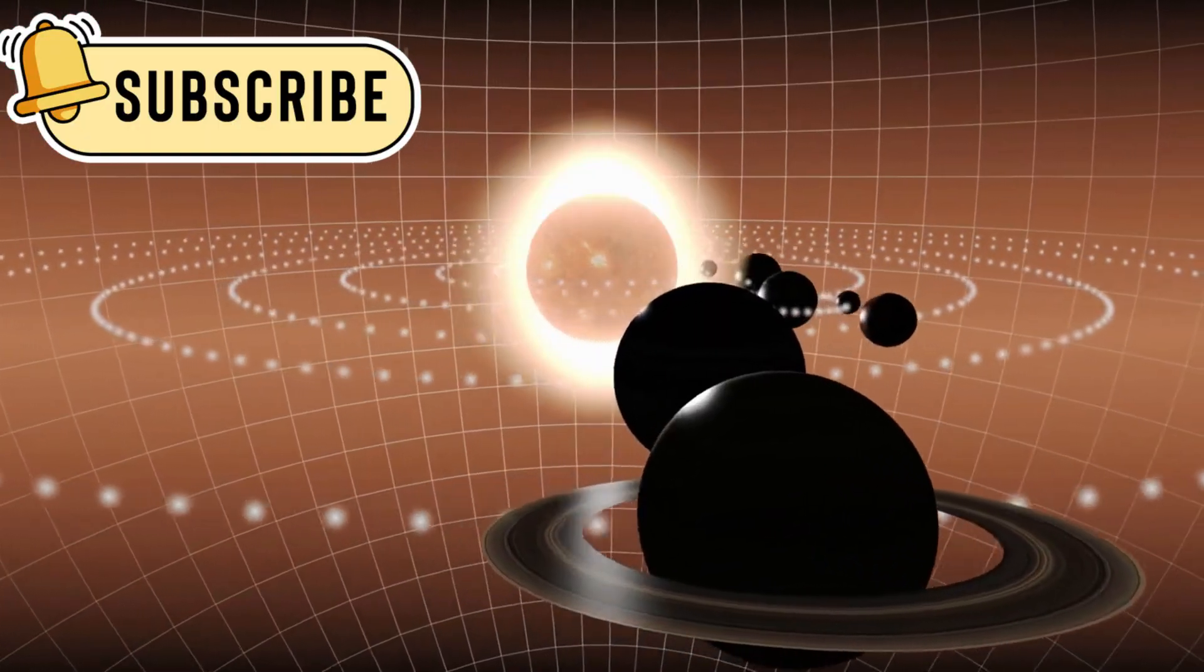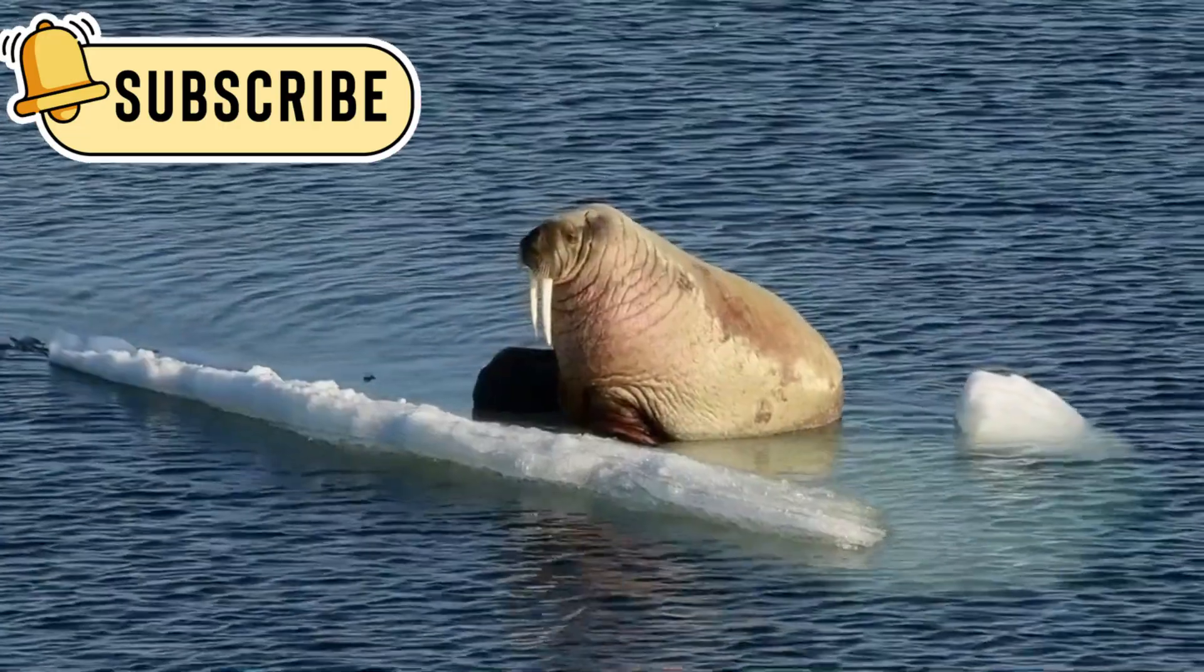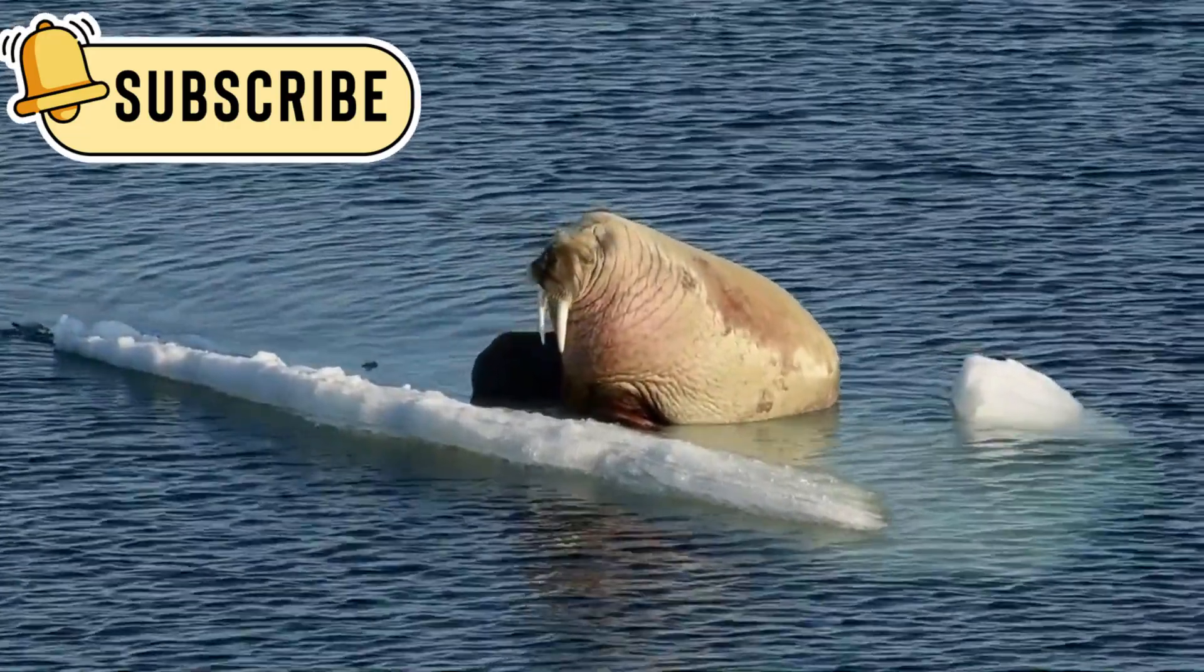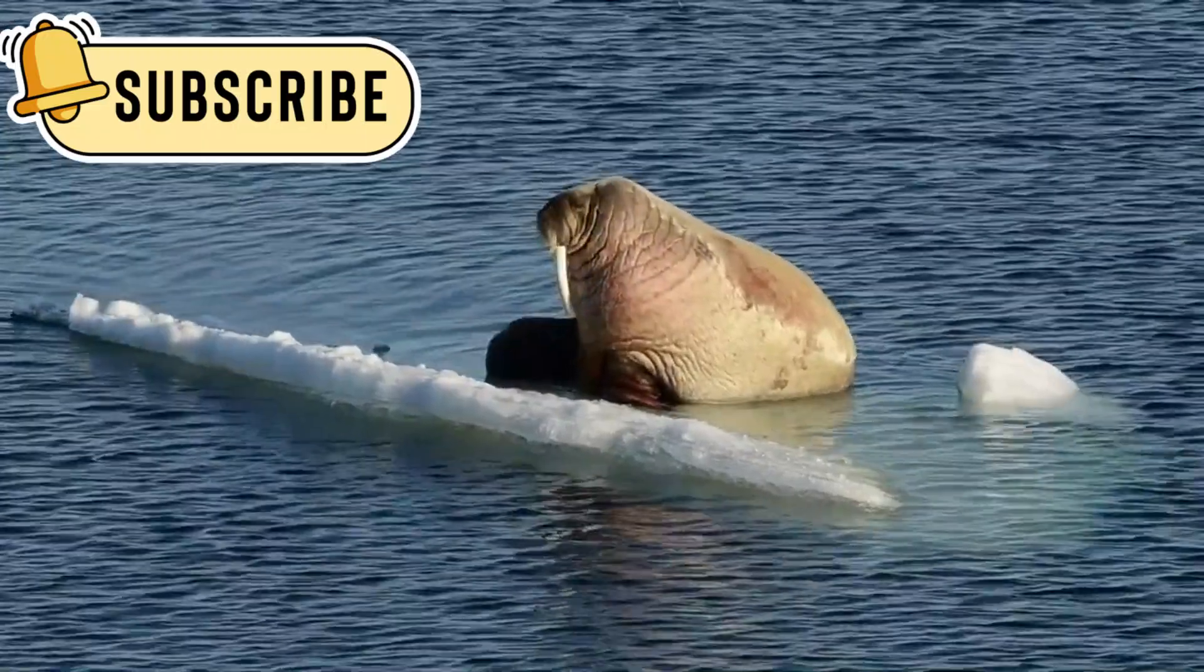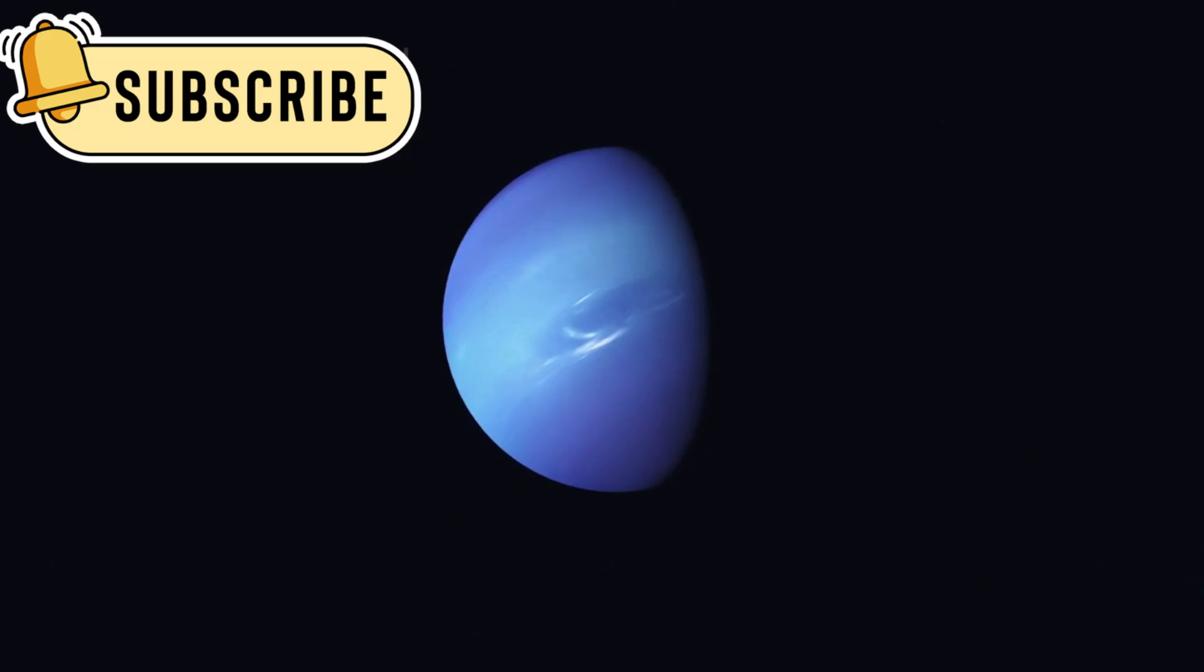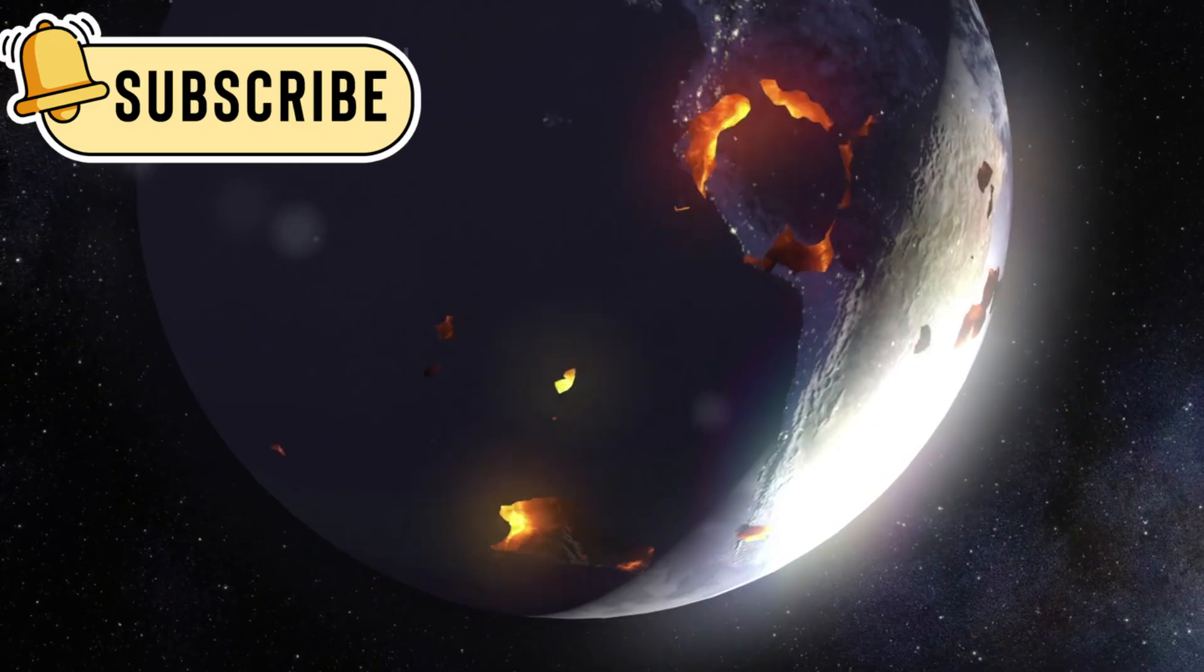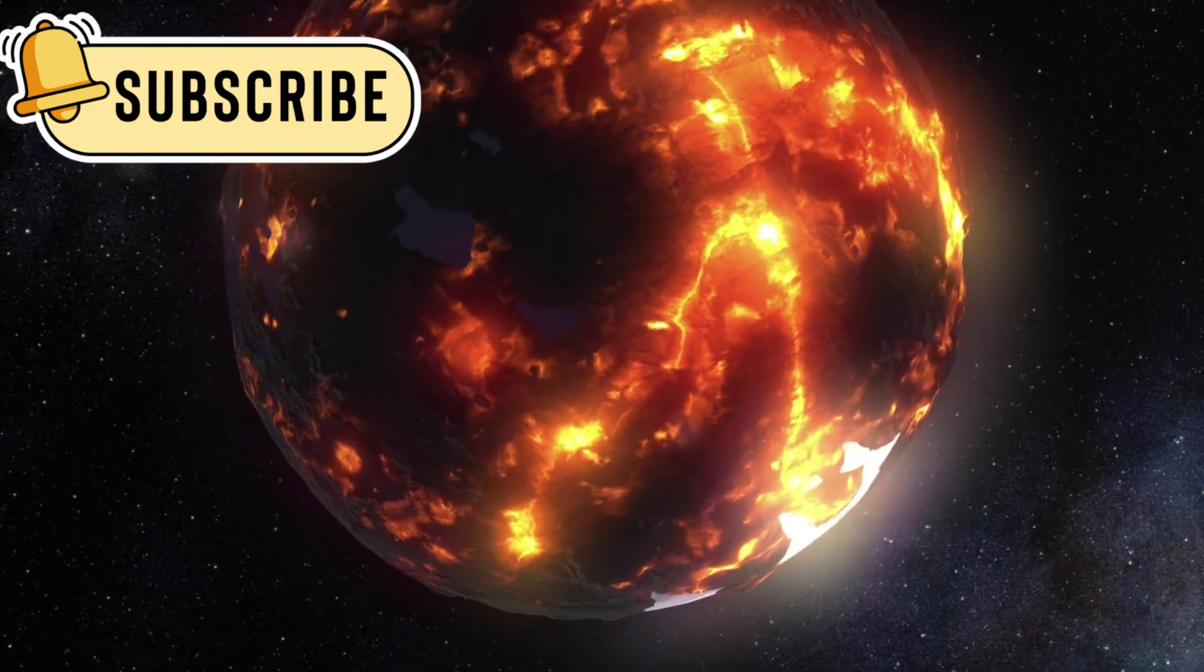The heart-shaped area called Sputnik Planitia has become the center of this discovery. It looks flat and smooth, but scientists now think this might be due to slow-moving ice flows beneath the surface. This type of movement is a strong sign that Pluto has ongoing geological activity. That means the planet isn't frozen solid, but instead has internal energy driving change.